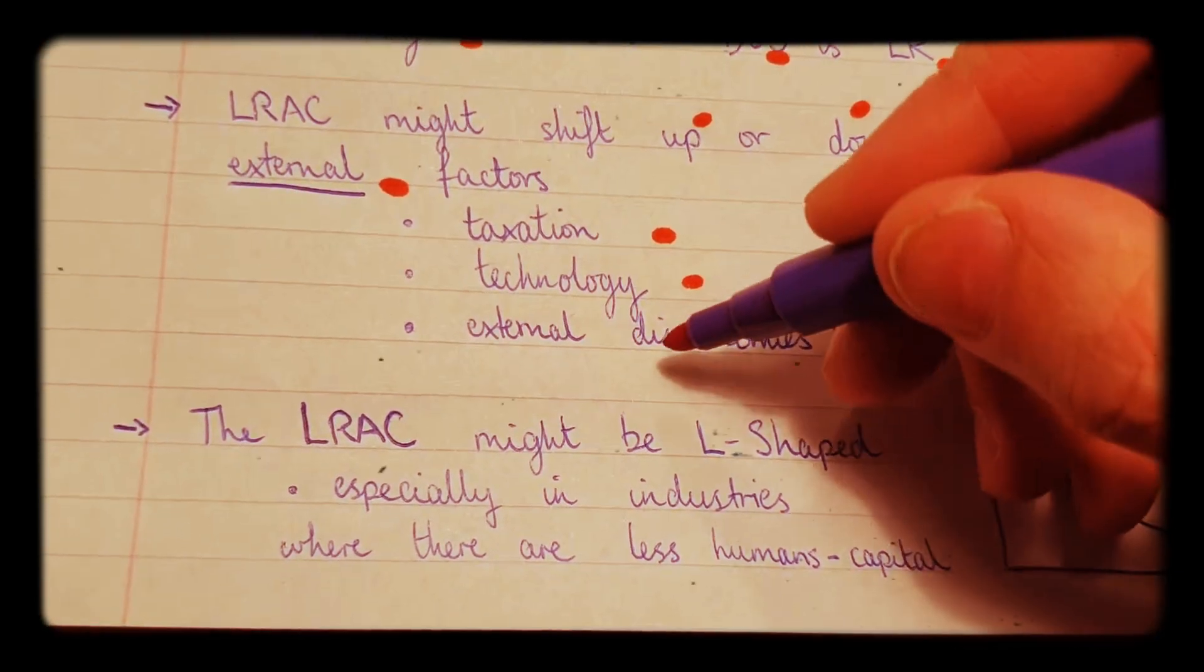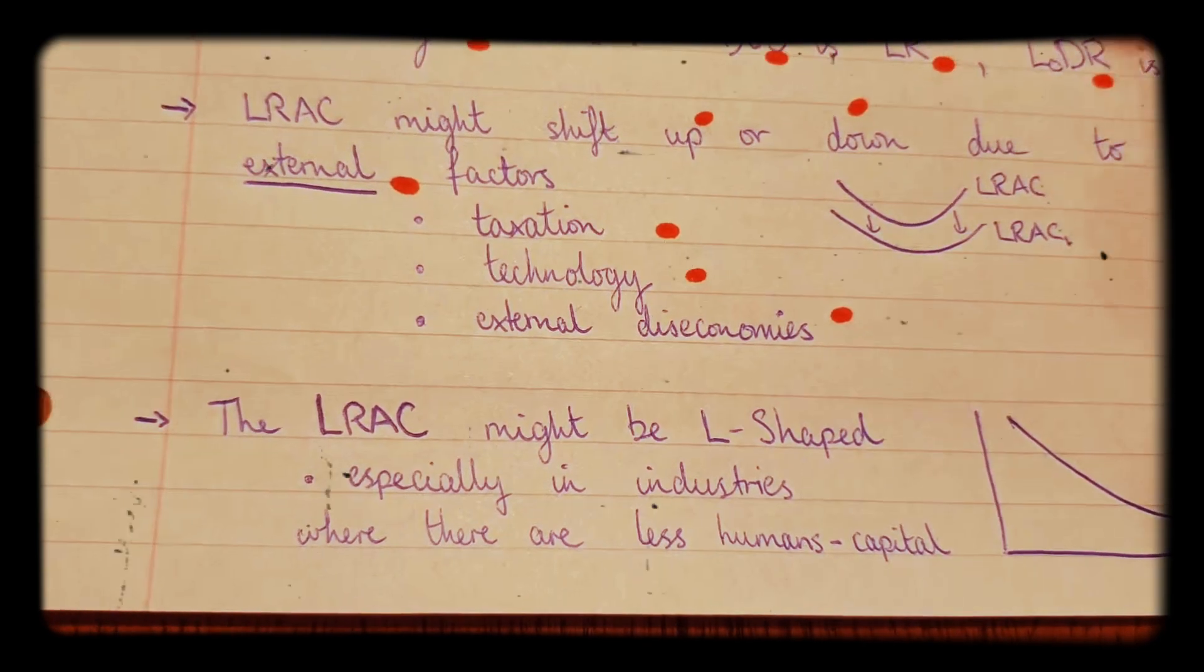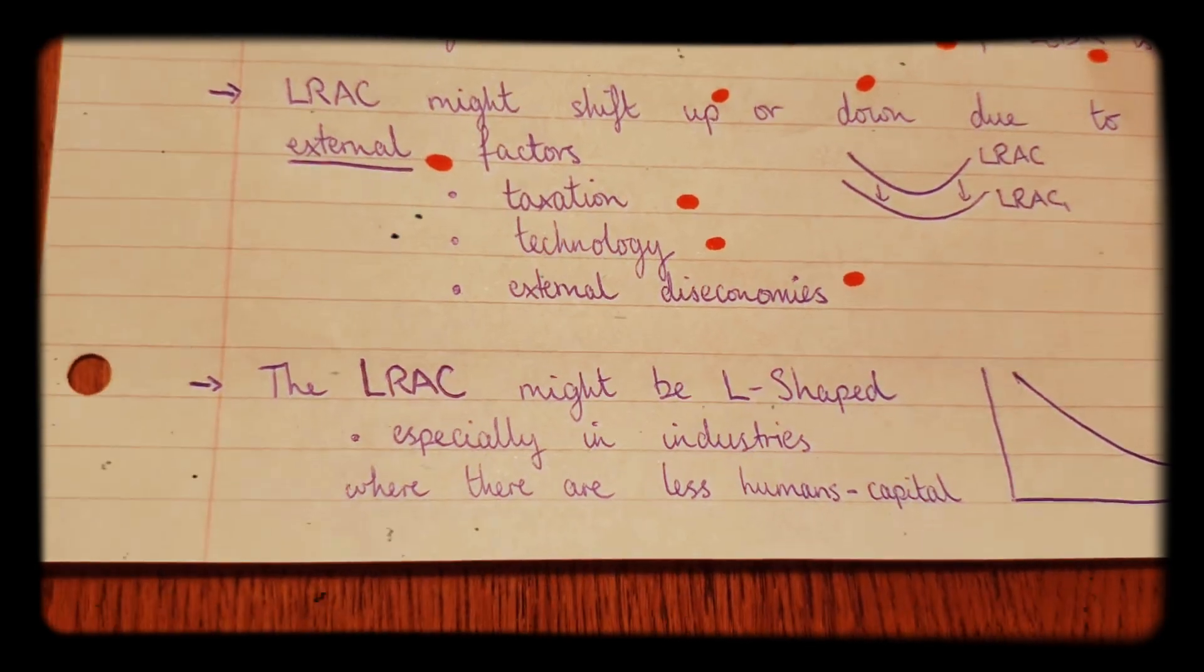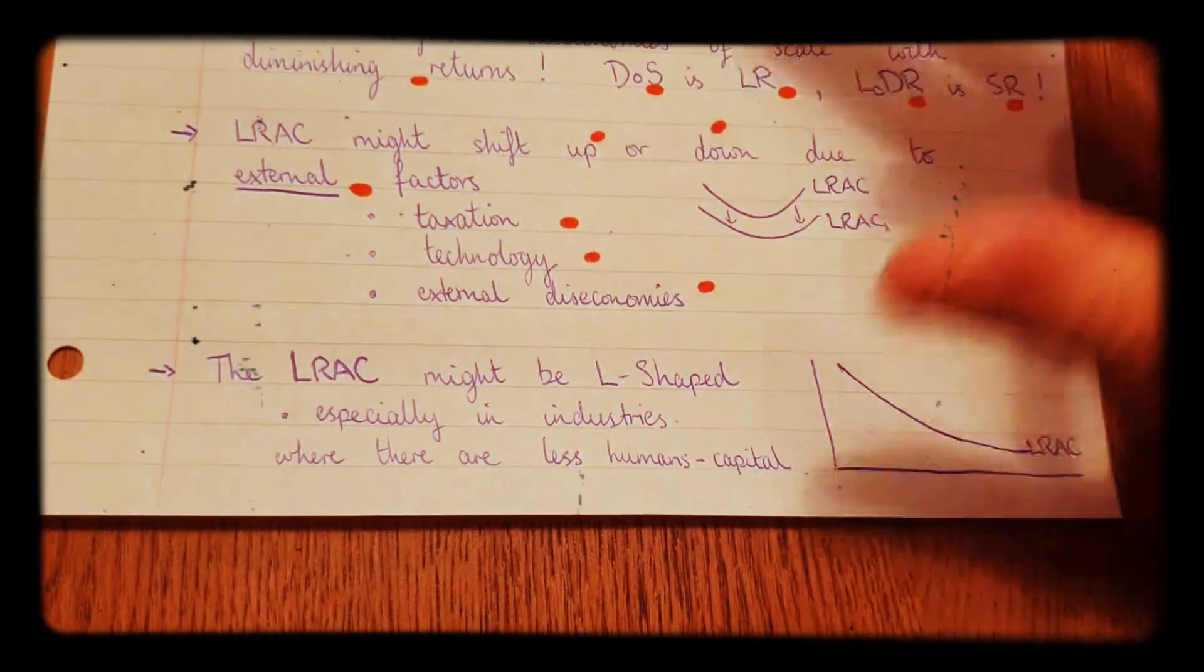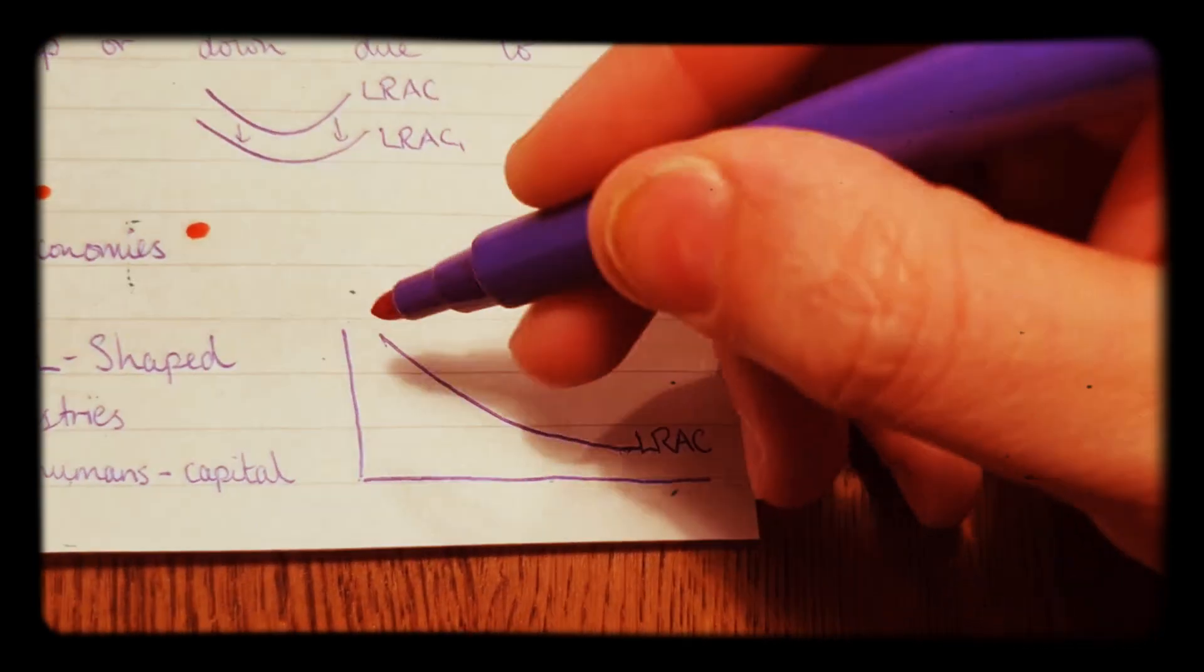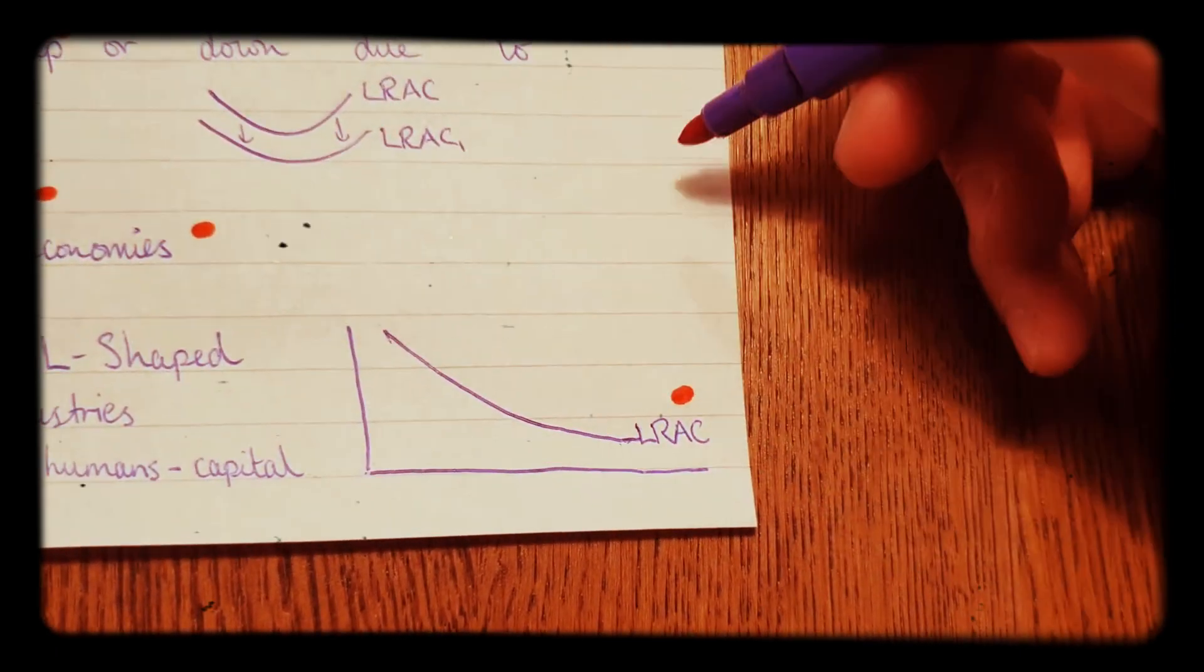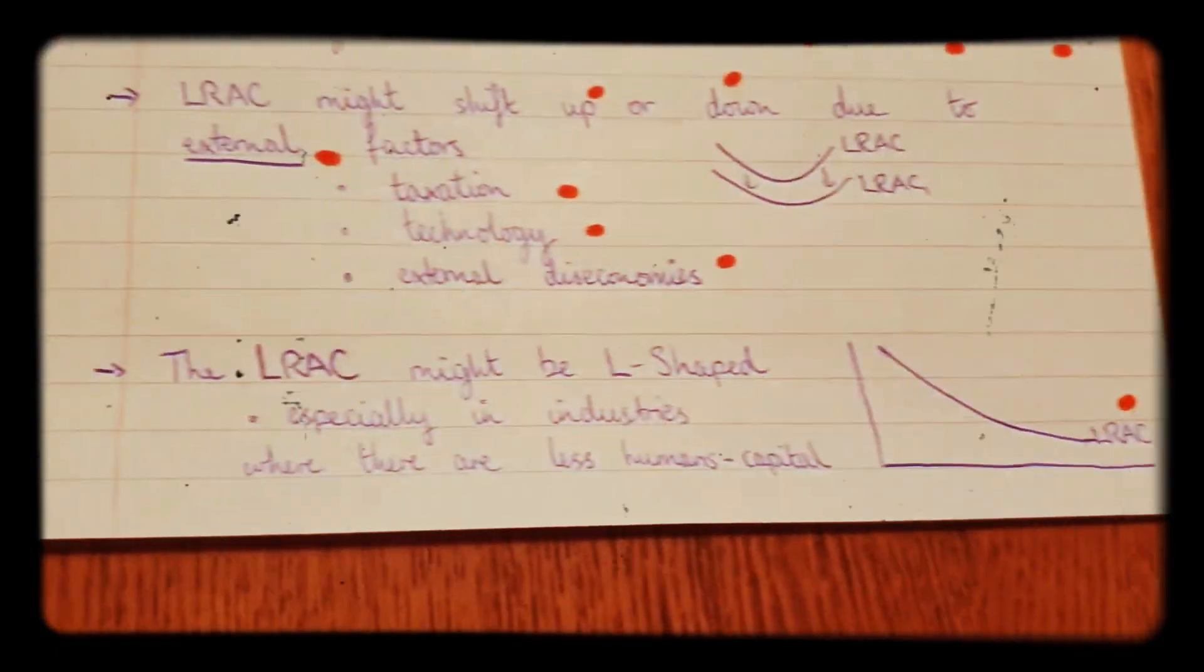So, we will come back to this point here, external diseconomies of scale. That's going to be covered in a separate video. Now, another type of long run average cost curve that you might come across is this one here, which is like an L-shaped curve. So, not a U-shaped. It's an L-shaped curve.